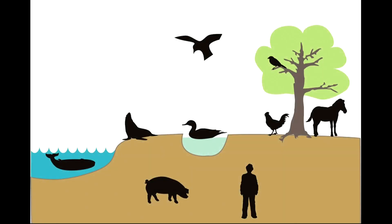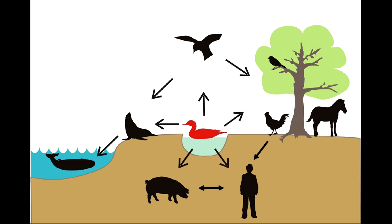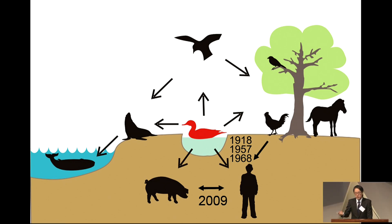Humans get infected with influenza virus, but influenza virus infects many different animals, including sea mammals. We now know that all these influenza viruses in different animal species originally came from wild waterfowl. The 1918 virus came from avian species, and the 1957 and 1968 pandemics involved avian influenza virus, while the 2009 virus came from swine.